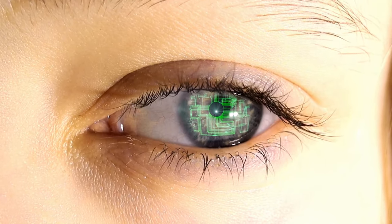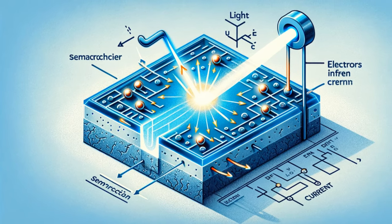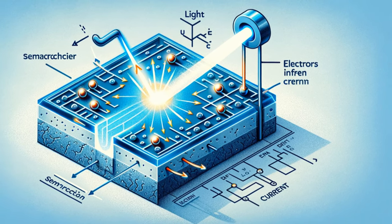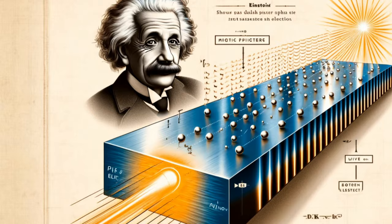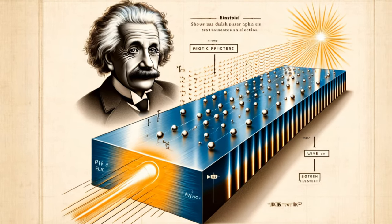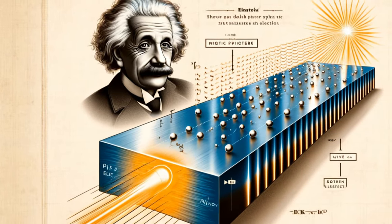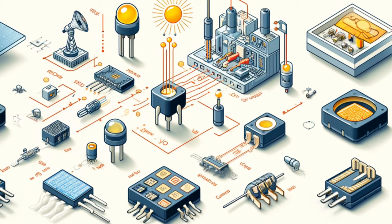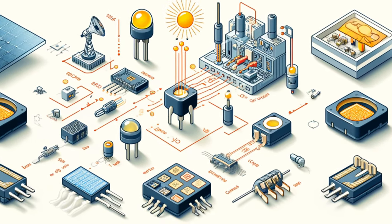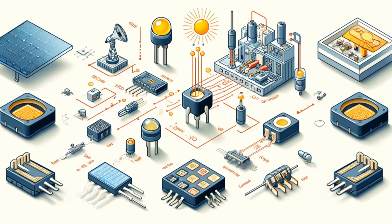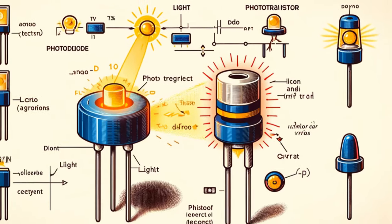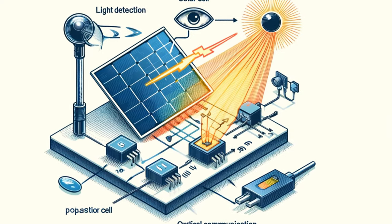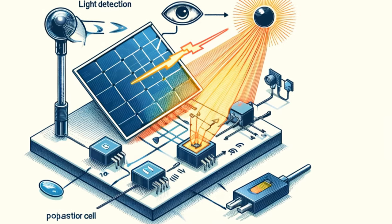Some semiconductors exhibit a remarkable property — they are sensitive to light. When light strikes the surface of these materials, it can excite electrons, generating a current. This phenomenon is known as the photoelectric effect. Photodiodes and phototransistors are semiconductor devices that exploit the photoelectric effect. They are used in various applications, including light detection, solar cells and optical communication systems. The sensitivity of semiconductors to light has revolutionized fields like photography, energy and telecommunications, enabling the development of digital cameras, solar panels and fibre optic cables.